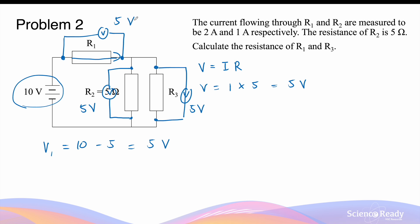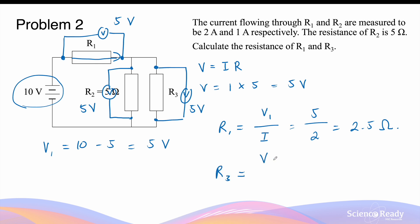Finding the potential difference for R1 and R3 allows us to calculate their resistances. R1 equals V1 divided by the current through it: 5 volts divided by 2 amps gives 2.5 ohms. For R3, we apply Ohm's law again: V3 is 5 volts and the current is 1 amp, giving a resistance of 5 ohms. This concludes the video on how to approach complex circuit problems.